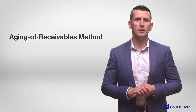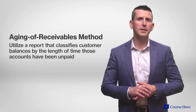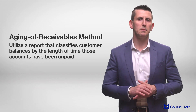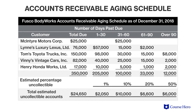Another popular method for estimating bad debt expense and uncollectible accounts is the aging of receivables method, which utilizes a report that classifies customer balances by the length of time those accounts have been unpaid. This is based on the simple notion that the longer a balance is due, the less likely it is that the company will actually be able to collect. Assume that Fusco Body Works categorizes the age of each of its customers' accounts based on whether the amount due is less than thirty days old, between thirty-one and sixty days old, between sixty-one and ninety days old, or over ninety days old. Each category is then assigned a percentage of uncollectibility.